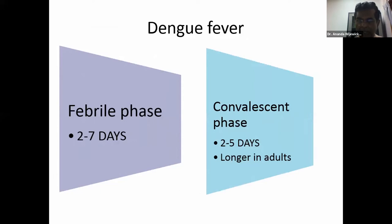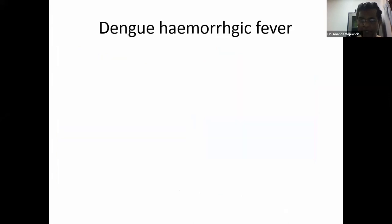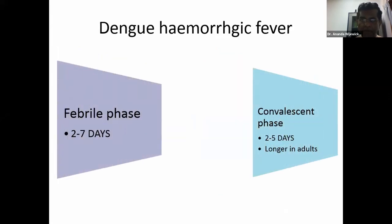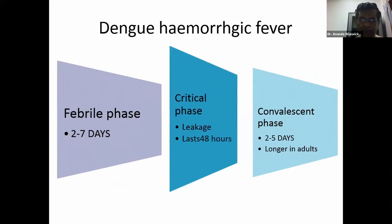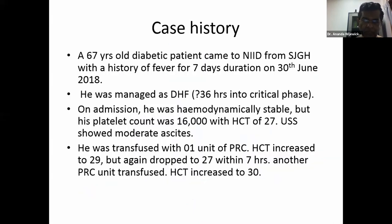In dengue, most people will have a febrile phase and a convalescent phase. However, in dengue hemorrhagic fever, in between these two phases there is a critical phase where plasma leakage occurs, and generally it lasts for 48 hours.